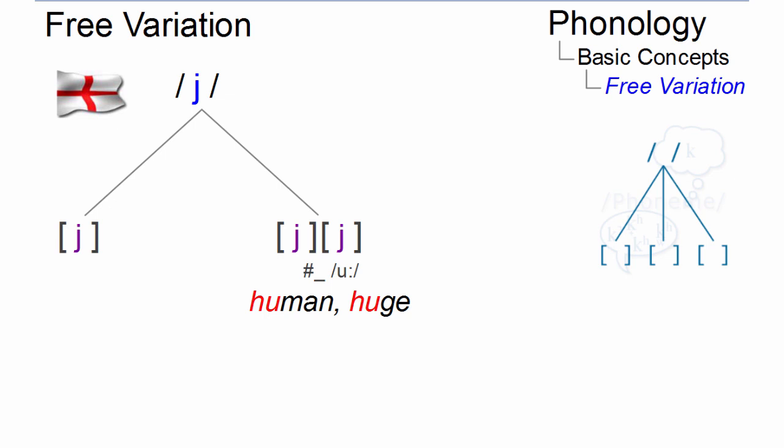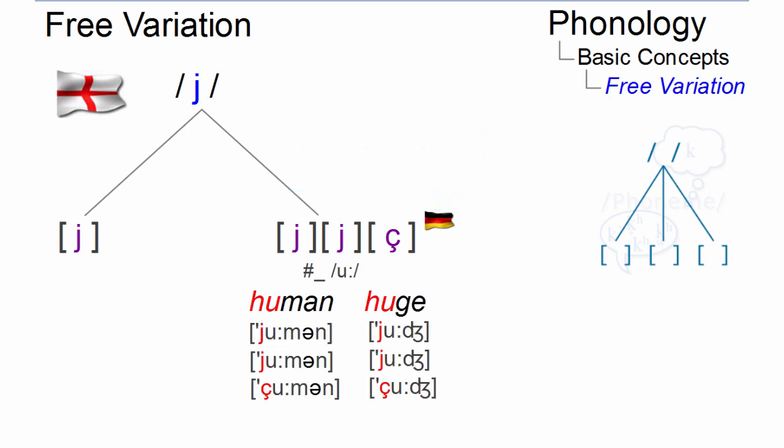Some speakers make it even voiceless like in German chemie and say human and huge. So we have three free variants.